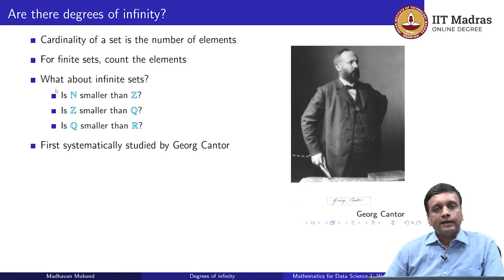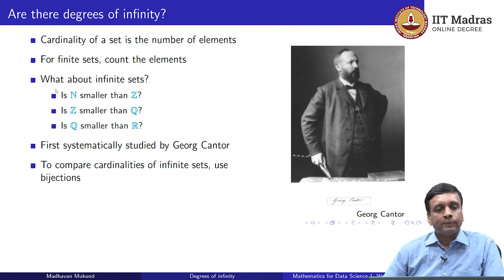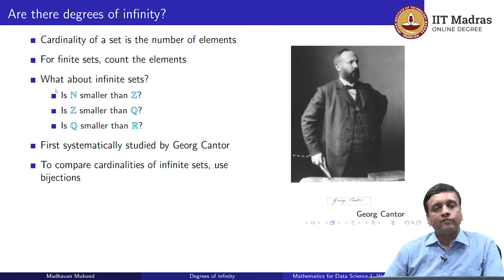This study of the cardinality of infinite sets was actually undertaken by George Cantor in the 1870s. And as we have seen when we studied functions, the correct way to compare the cardinality of infinite sets is to use a bijection.